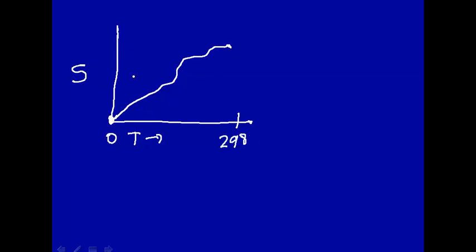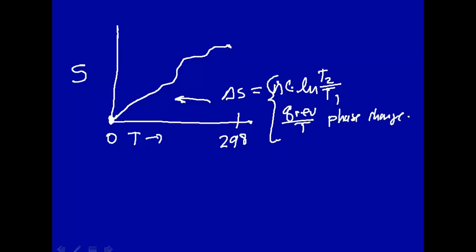This means that, and how do you calculate these changes? Remember from the lecture that delta S can be equal to N times heat capacity times the natural log of the final temperature divided by the initial temperature T1, or delta S can be equal to Q reversible over T for a phase change.